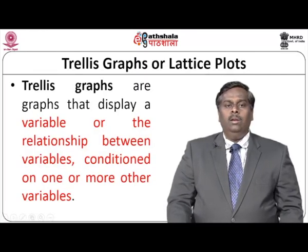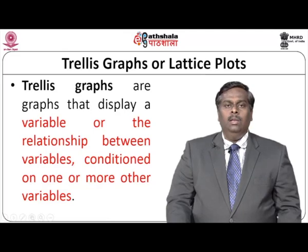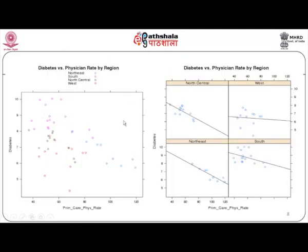There is another type of graph called a trellis graph, also known as a lattice plot. Trellis graphs display a variable or the relationship between variables conditioned on one or more other variables. For example, you can plot cases of diabetes with respect to various regions. If visualized as a single scatter plot, various cases of diabetes would be highlighted by different colors — blue for the northeast region, red for the south, green for the north central region, and so on.